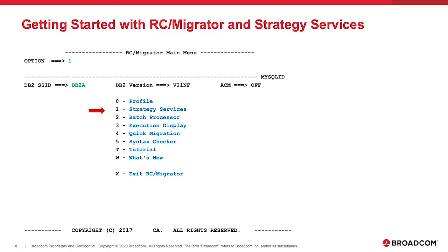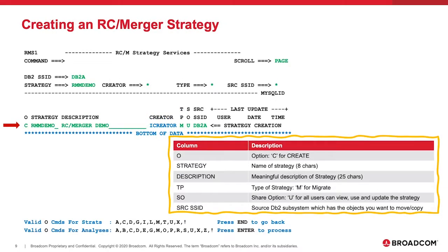Here we complete the line to give the basic details about the strategy. We say that we want to create a new strategy called rmmdemo with a description of RCMergerDemo. Our creator ID is already populated, shown here in the middle in blue. The type of strategy we need in this case is a migrate, and for SO or share option, we are saying we are happy for anyone else on the system to view, use and change this strategy. The final piece of information is the source DB2 subsystem ID, which is where our existing DB2 objects are located. You can press PF1 or put a question mark in the field and press enter for online help. Once we have completed this line of information, we press enter to take us to the next screen.